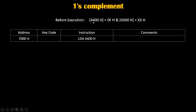Before execution, 4400h was carrying 0Fh. Therefore, because of this instruction, our accumulator will become 0Fh. Now this 0 can be written as 0000 in binary, and F in hexadecimal can be written as 1111 in binary.